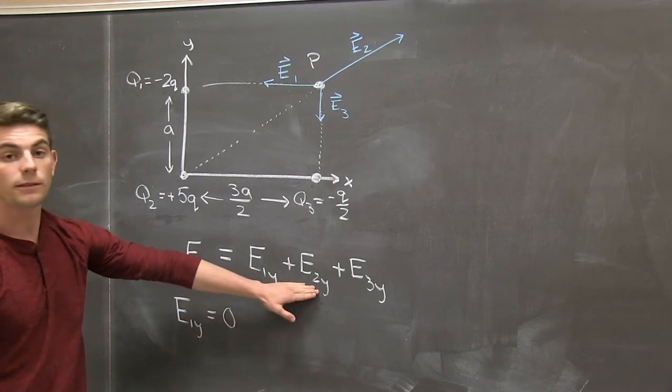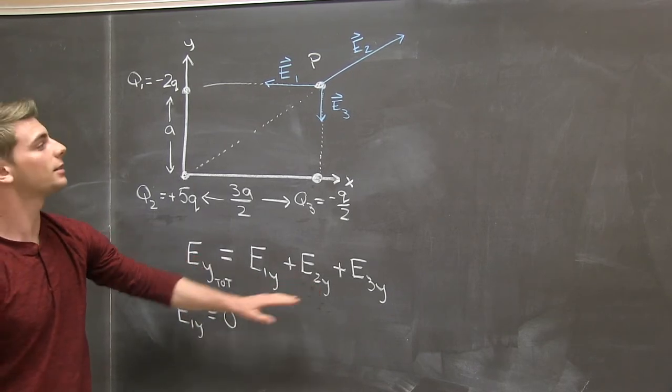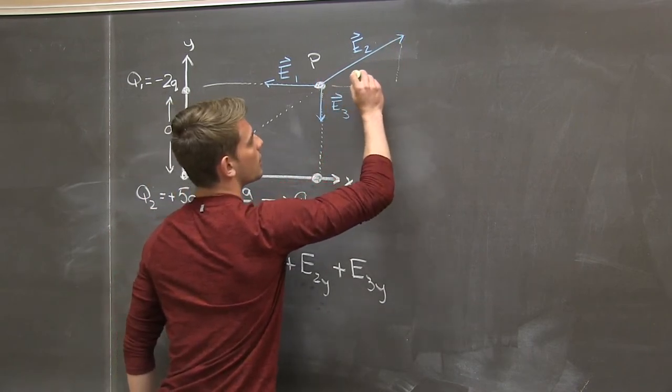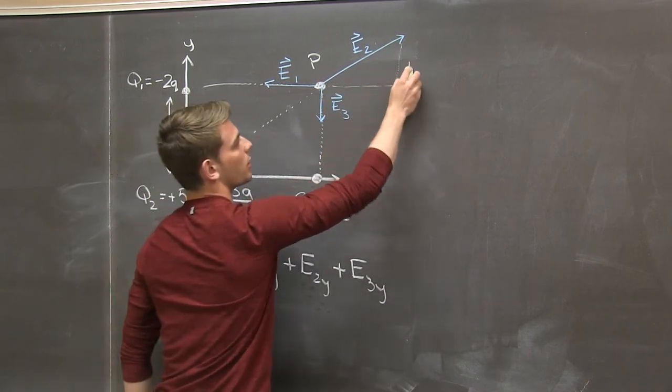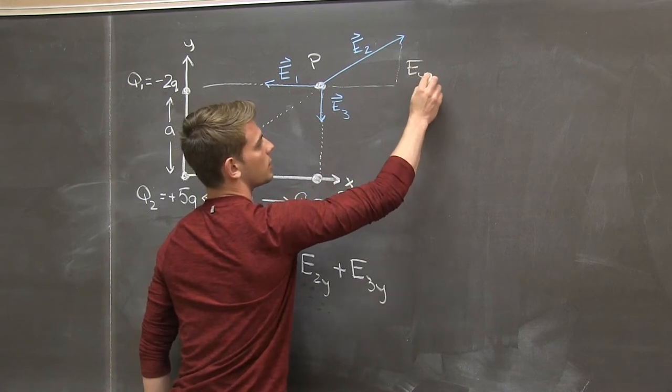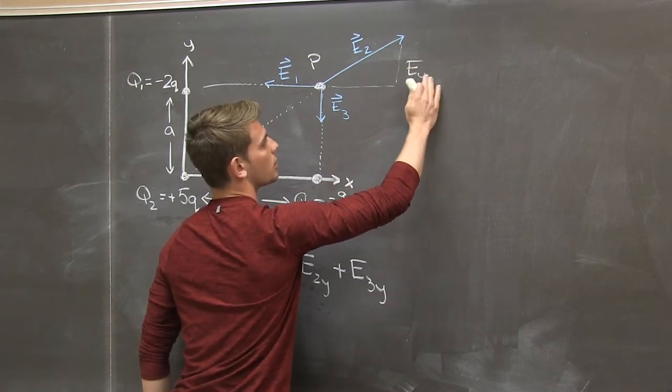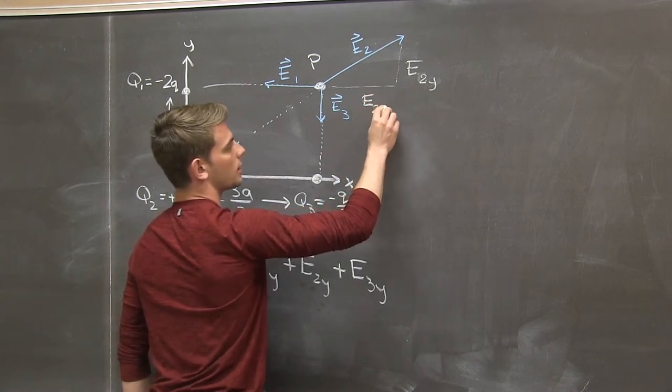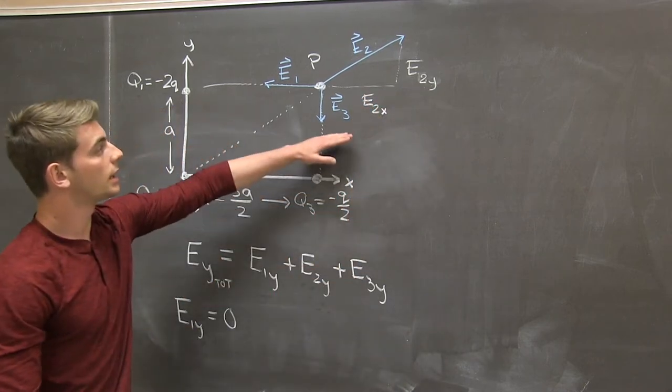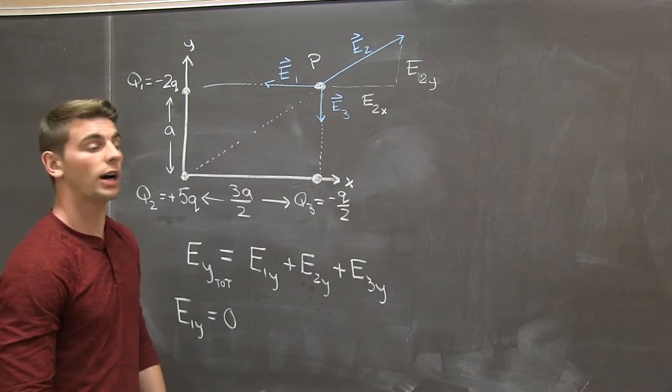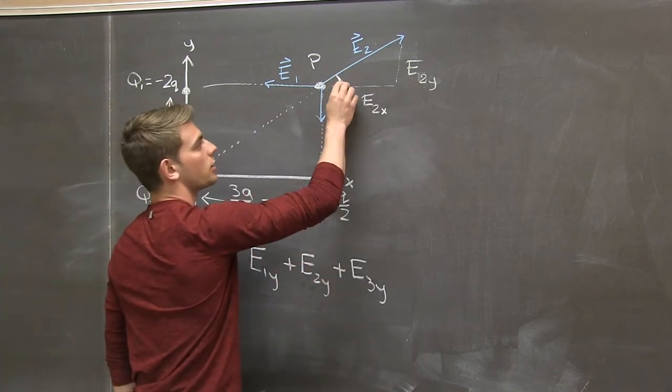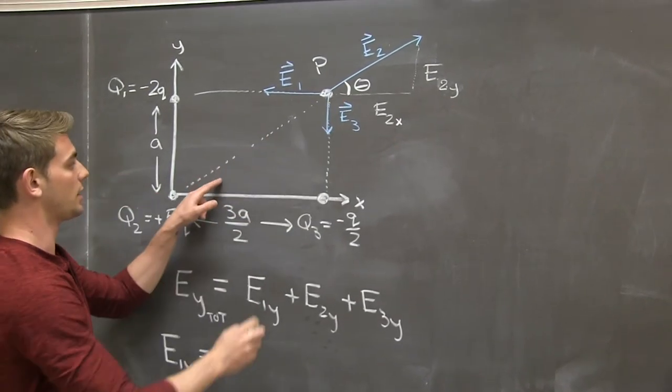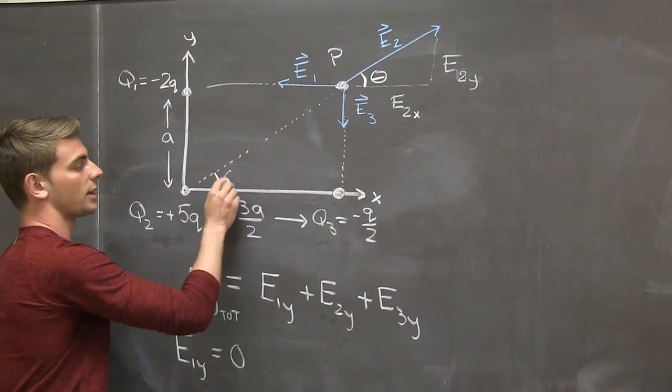Next, we look at e2, which is without a doubt the hardest. And we see that e2 has x and y component. Here's its y component, and here's its x component. Now in order to get e2 in the y direction, we have to introduce this angle theta, which happens to be the same theta that's here, and that will come in handy later on.